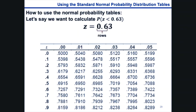So the value of z up until the first decimal place gives the position of the row and the second decimal place gives the position of the column. So the row is 0.6 and the column is 0.03 which is at the second decimal place.